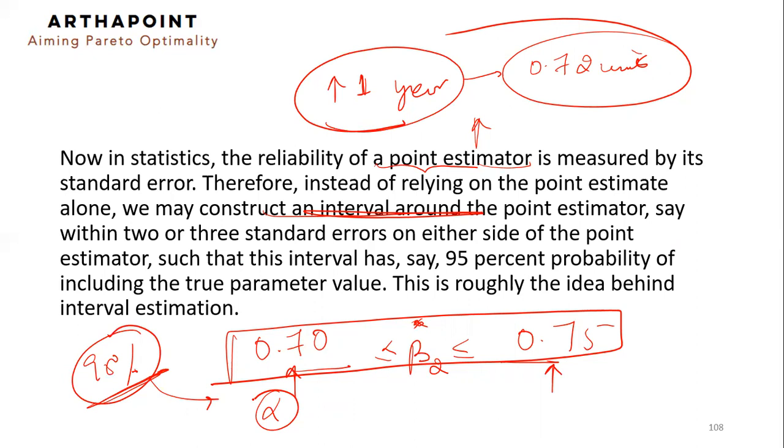It's around the point estimate within, say two to three standard errors on either side. And you would know how we would calculate it as we go through the chapter, how this interval would be constructed, such that we end up saying that with 95% probability, the true parameter value lies within this interval, or with 99% probability, the true parameter value lies within this interval. Something like that. That is the concept of interval estimation. This entire chapter is going to be focused on the concept of interval estimation.